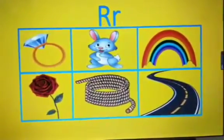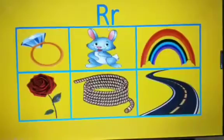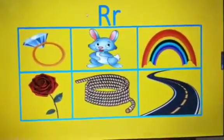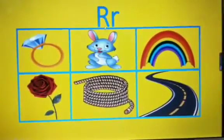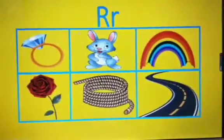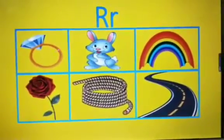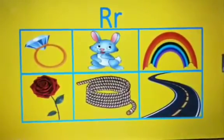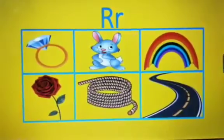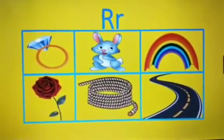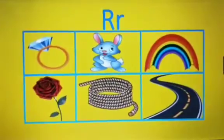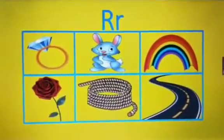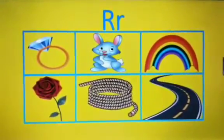Now, uppercase letter R and lowercase letter R. What is the sound for the letter R, children? The sound for the letter R is R. Ring, rabbit, rainbow, rose, row. Last one is road.